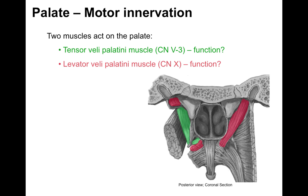All right, now the muscles — the palatal motor innervation. So the two muscles that act on the palate: in green is the tensor veli palatini, also known as the eensy-weensy teeny-weeny tensor veli palatini muscle. As its name indicates, it tenses the palate when swallowing. It's innervated by cranial nerve V3, and its function is to tense the palate.